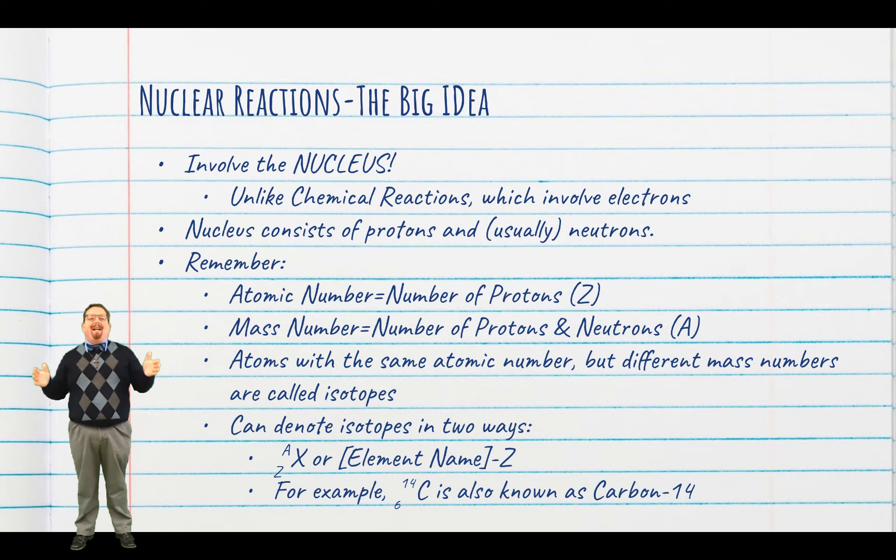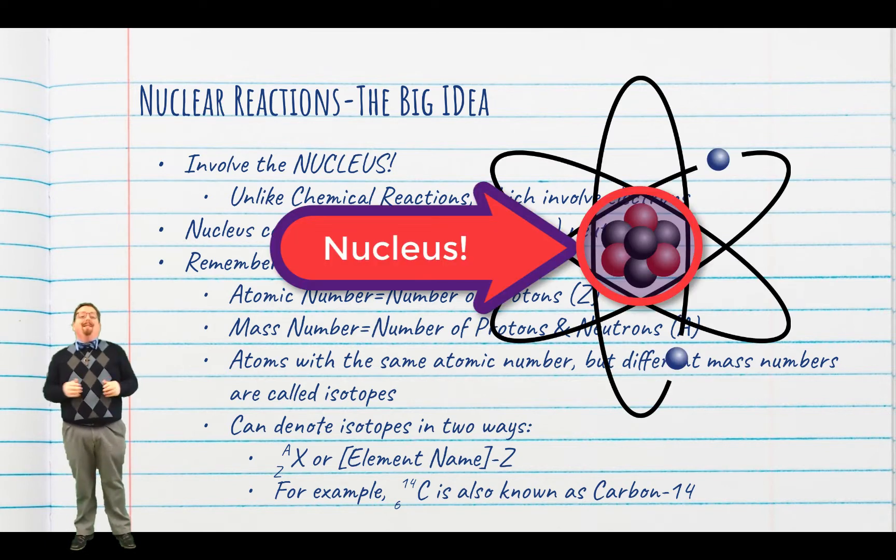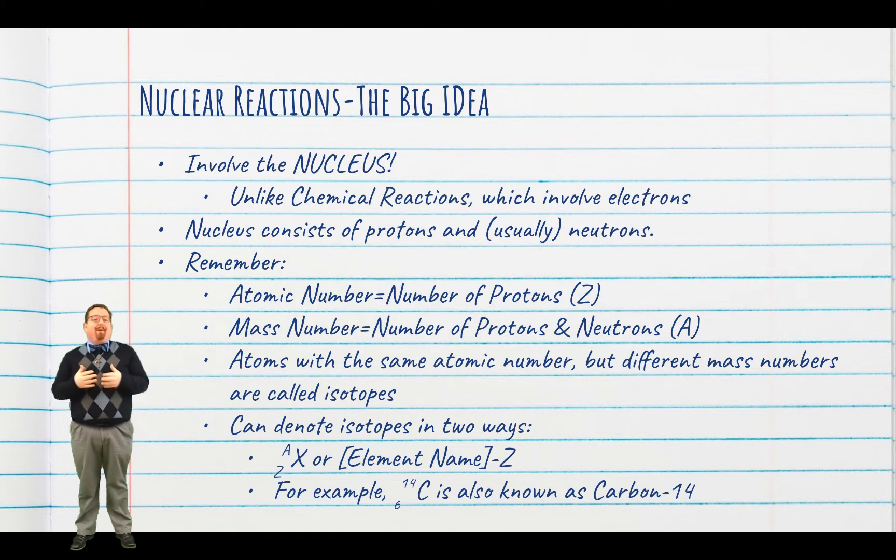The big idea behind nuclear reactions is that they involve the nucleus. This is different than when atoms bond together in chemical reactions, as those involve only the valence electrons. Nuclear reactions involve all sorts of other particles, including the two you already know exist in the nucleus, the proton and the neutron.